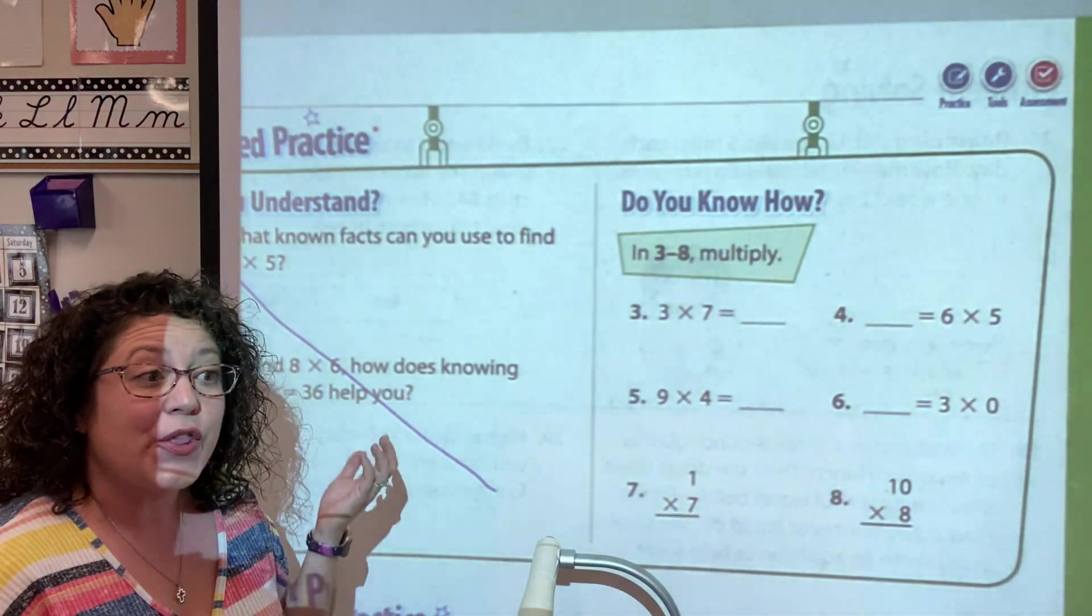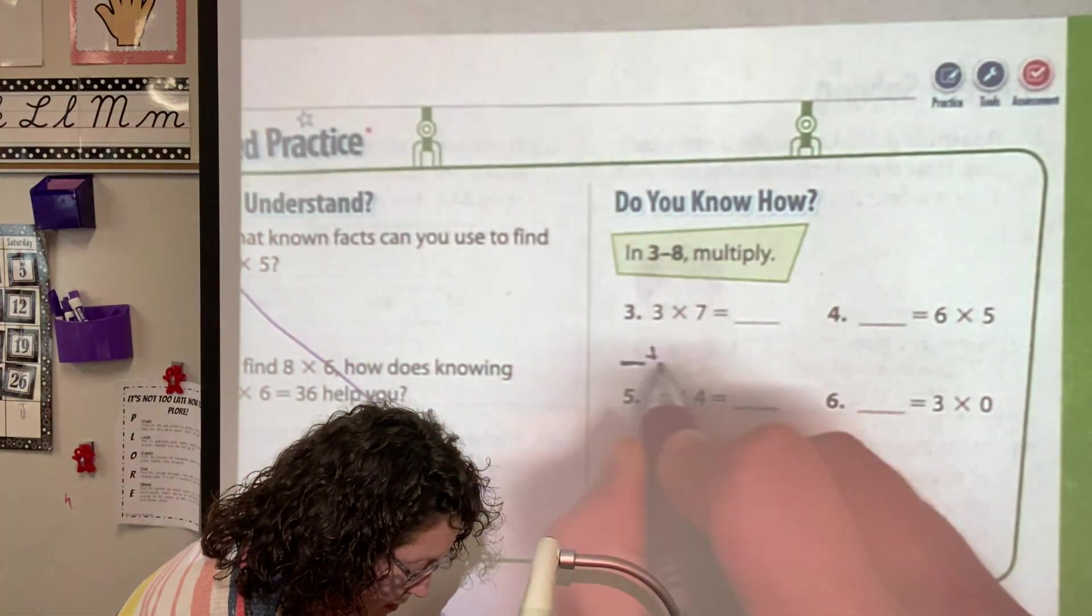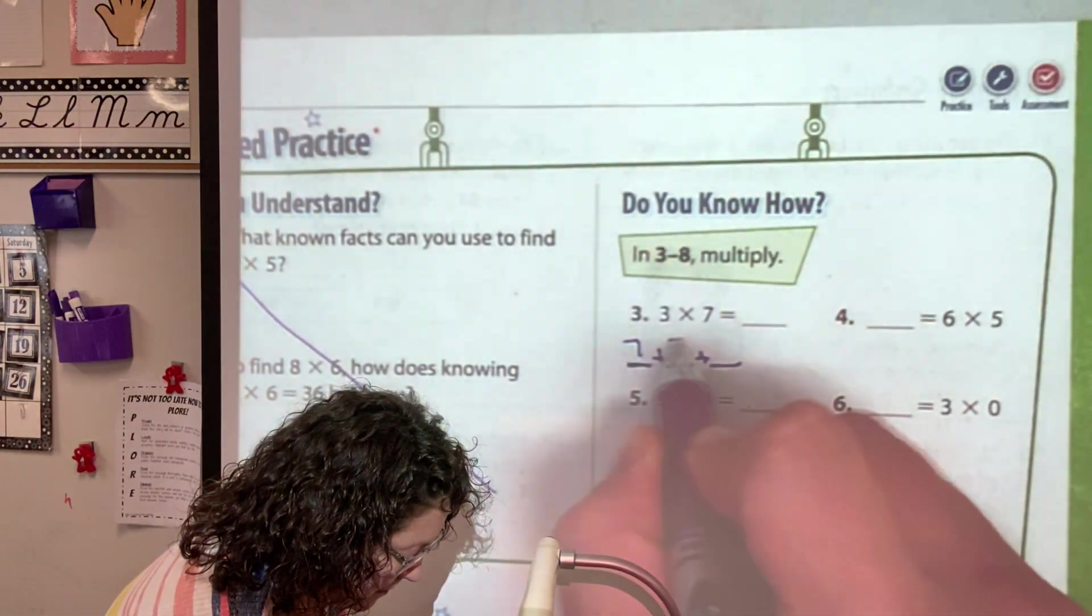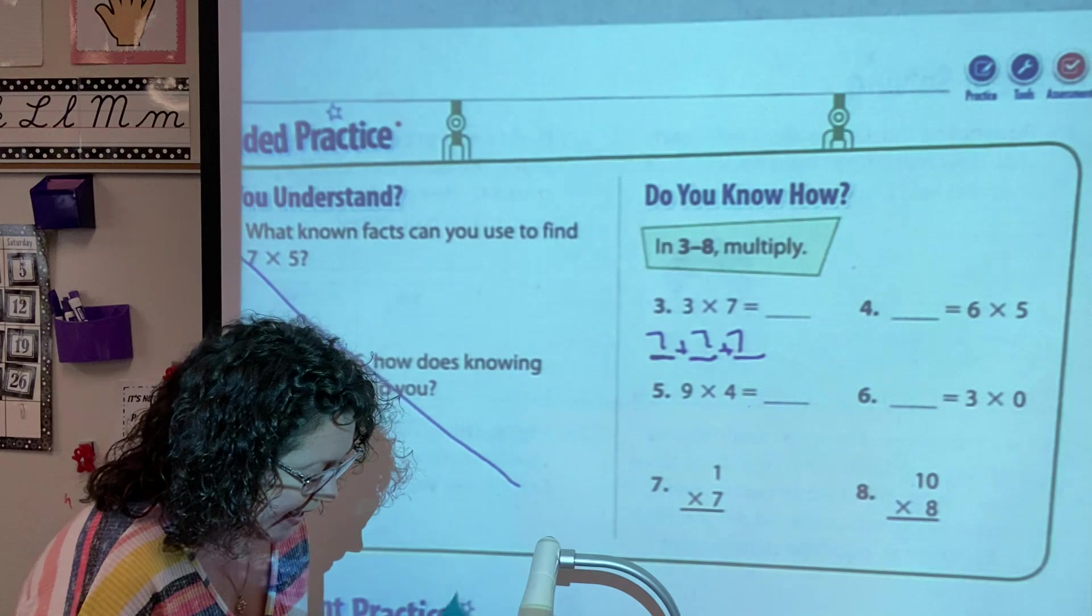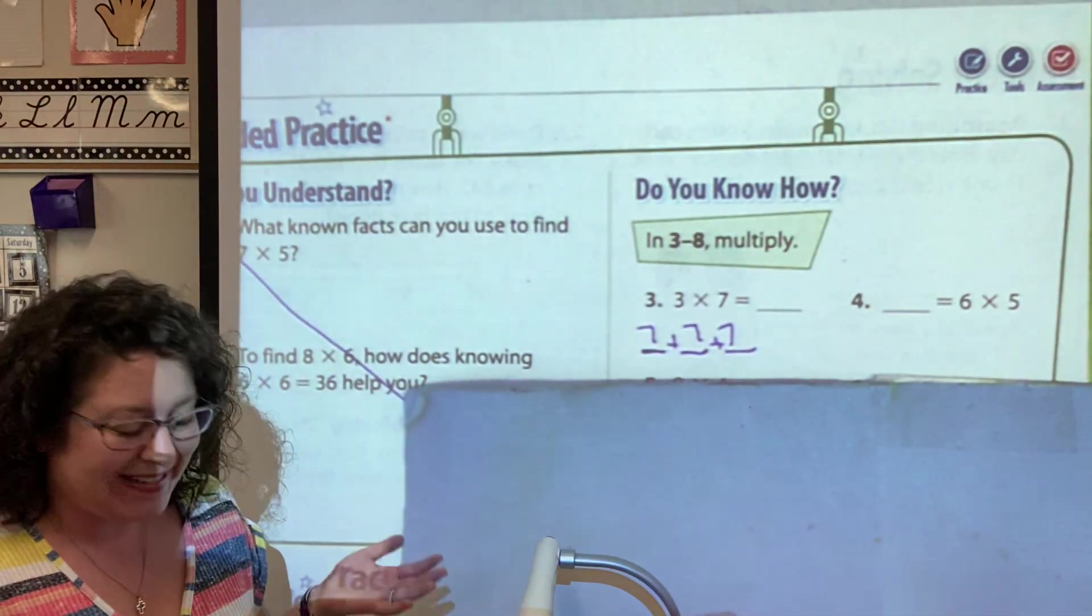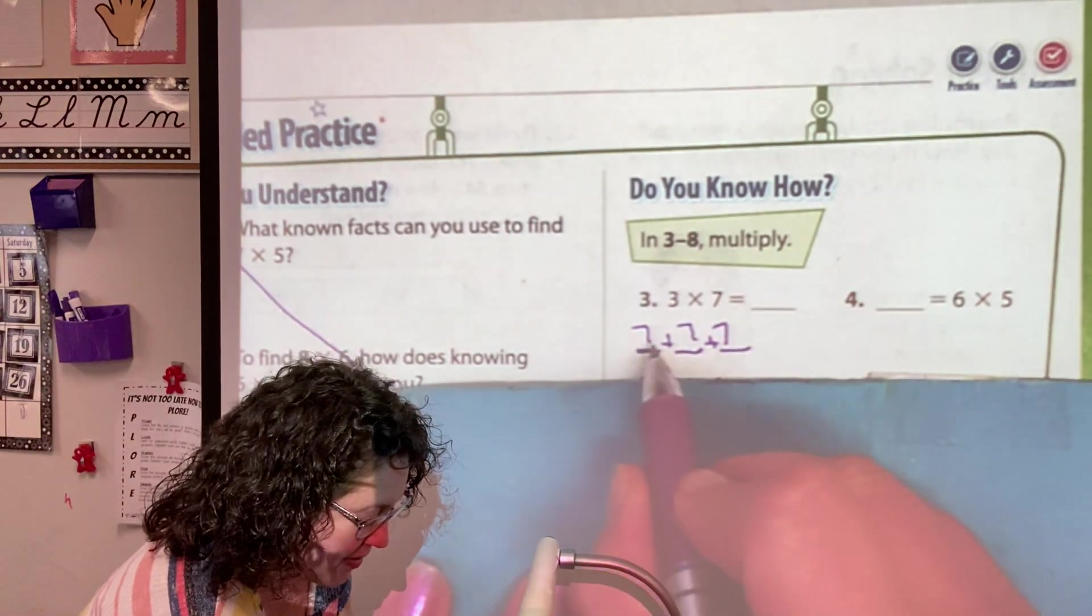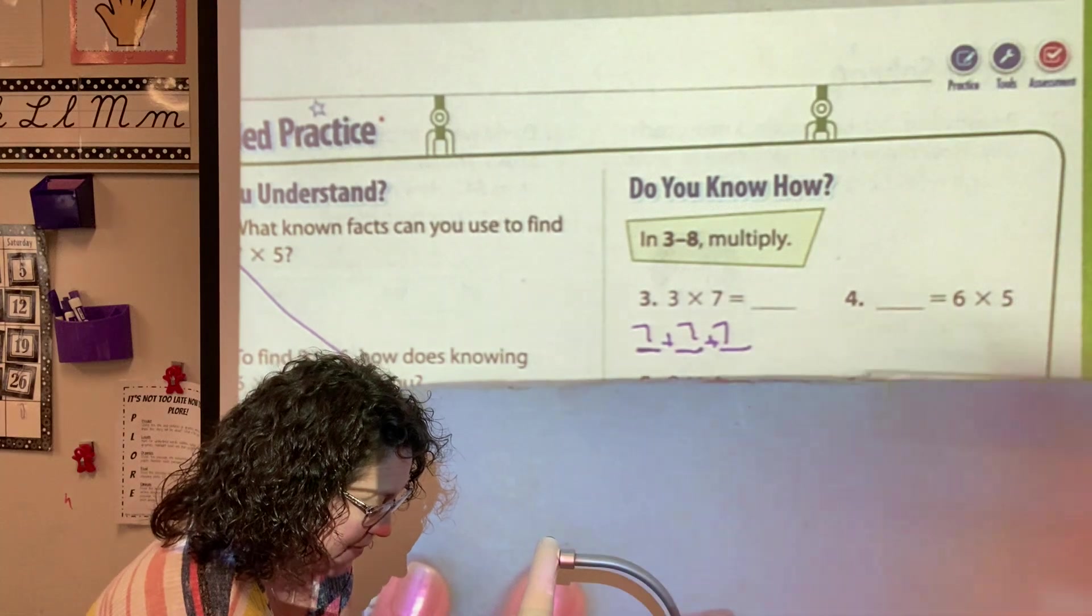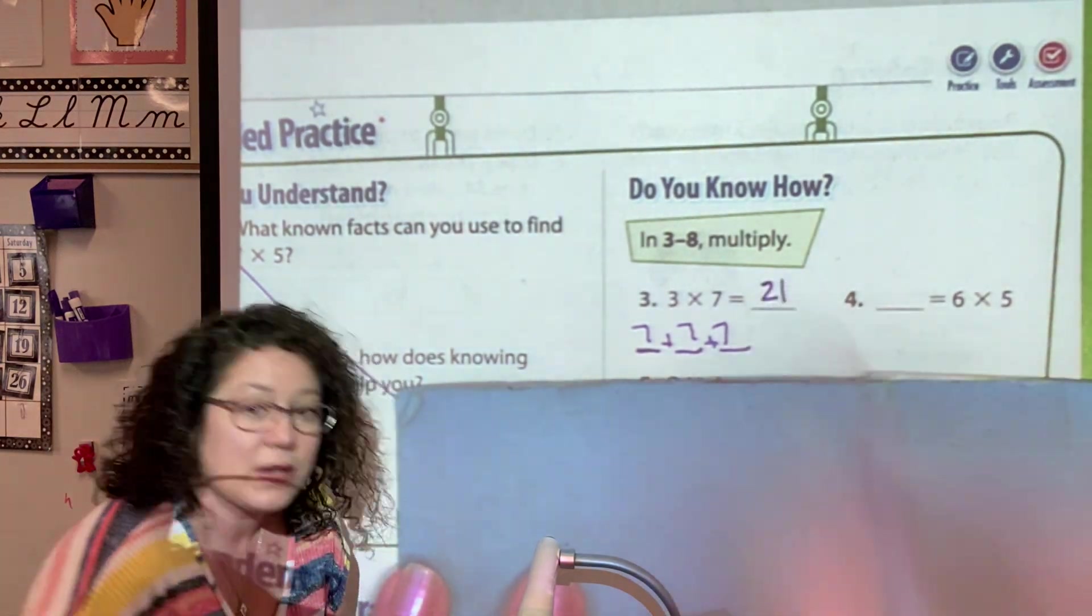So if I say three times seven, I know that means three groups and seven in each group, right? So then I would add my seven plus seven plus seven because remember multiplication is repeated addition. So I know seven plus seven is fourteen and I know fourteen plus seven is twenty-one.